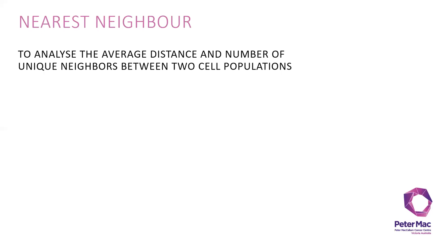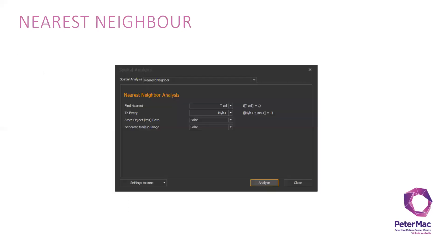First, nearest neighbor. You use it to analyze the average distance and number of unique neighbors between two cell populations. For example, here I would like to find the nearest T cells to every MIB-positive cell. On HALO, it allows you to store each individual data, showing the individual distance data or the markup image on your image.